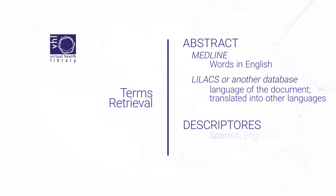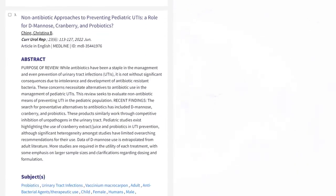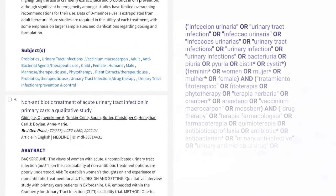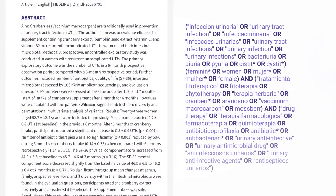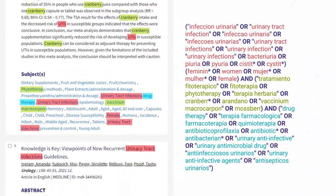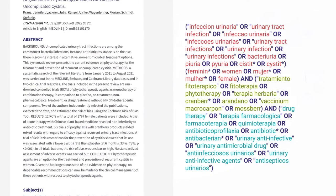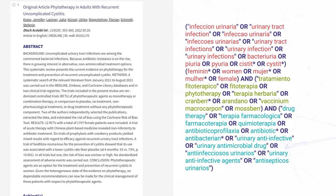The descriptors are shown in Spanish, English, Portuguese, or French, according to the interface language. Let's check the retrieved documents according to the search expression. At least one term of each PICO element must appear in the document. Here's a reference in which we confirm that at least one term of each PICO element has been retrieved.